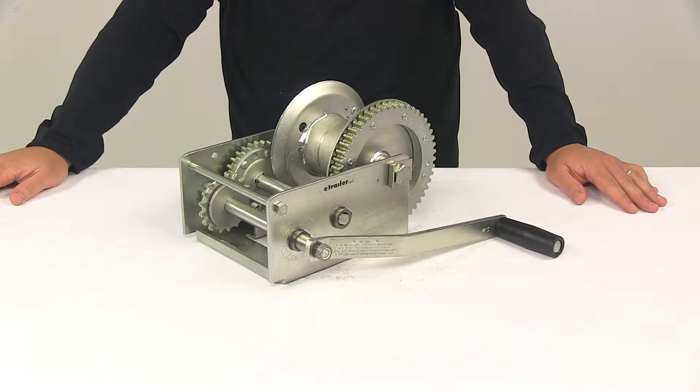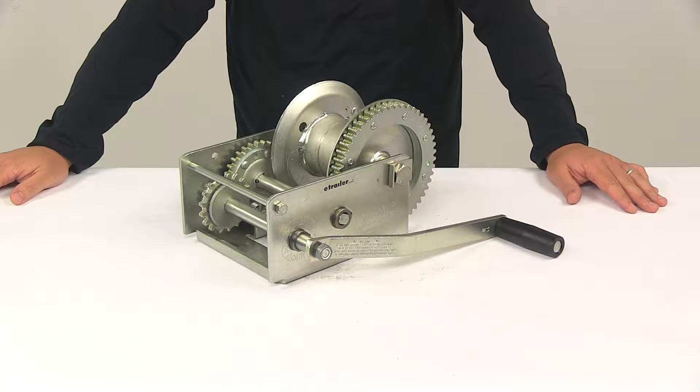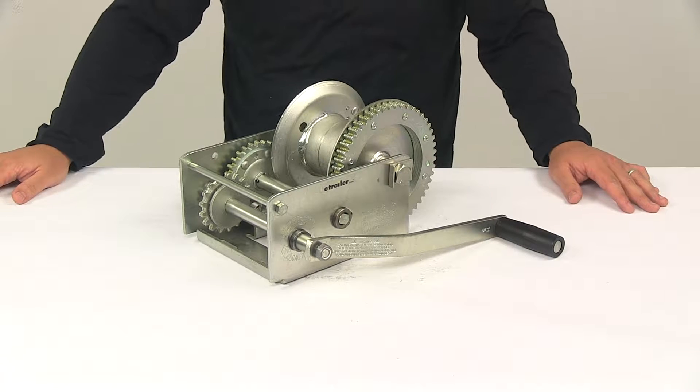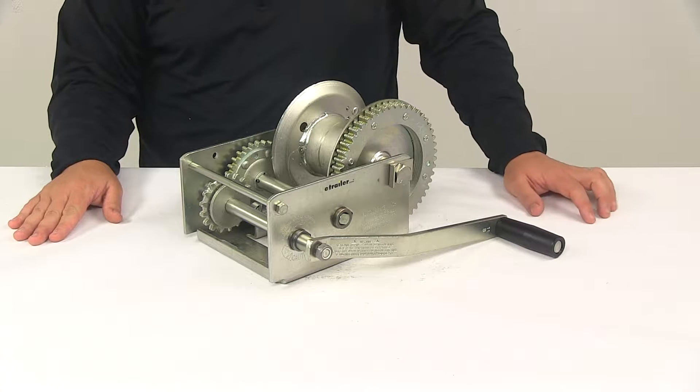Today we're going to be taking a look at the Fulton High Performance Brake Winch. A brake winch is perfect for boat lifts, grain augers, manual forklifts, hoists, and many more applications.